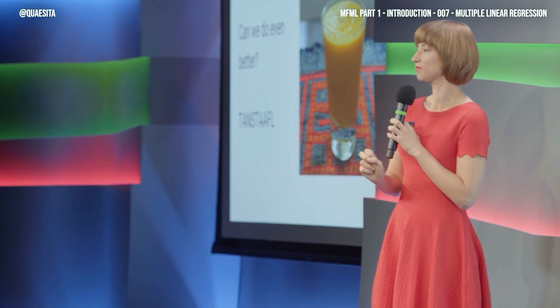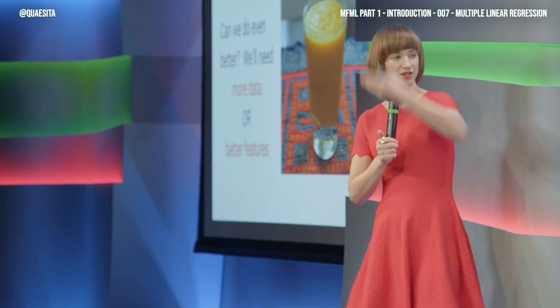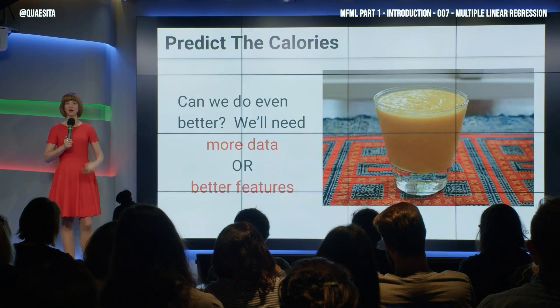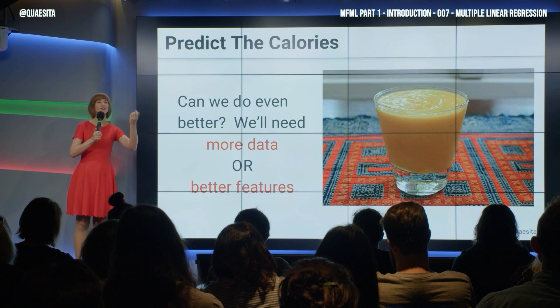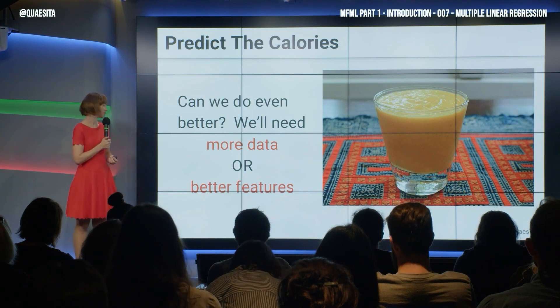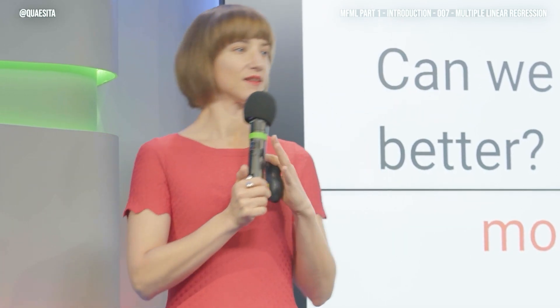We need — any guesses? More information, exactly. That was very nicely put because that says two things at once: more information in the sense of just more of the same data, or more information in the sense of other kinds of information that might be helpful. In other words, more features. Features in this setting refers to variables, attributes in other settings.